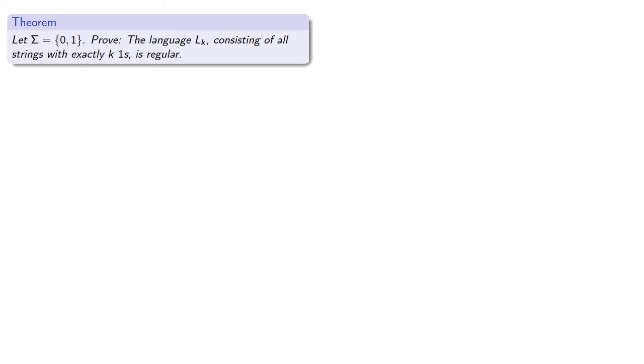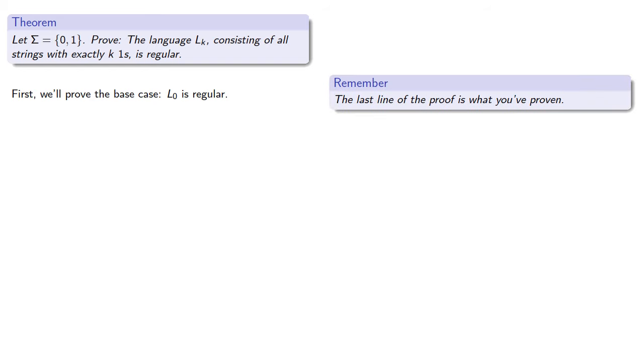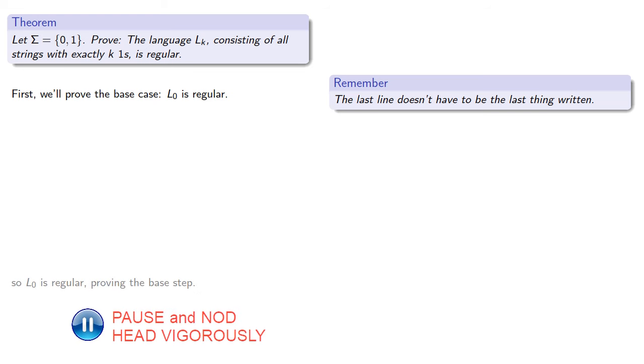So first, we'll prove the base case, which in this case is that L0 is regular. So a few useful strategies to remember: the last line of the proof is what you've actually proven, but the last line doesn't have to be the last thing written. And in this particular case, we want to prove that L0 is regular. So let's make that the last line of the proof, but we'll go ahead and write it down, leaving some space to fill in. The idea is that this gives us a destination, and we just have to map out the route.